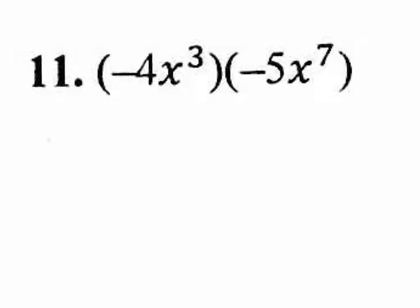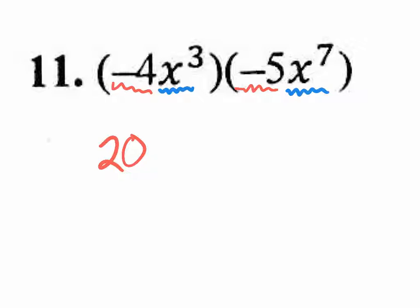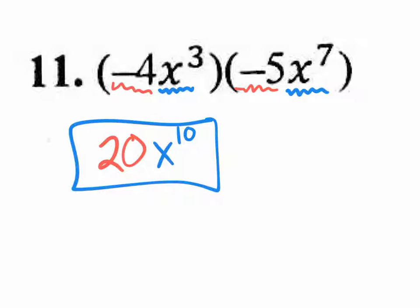Number 11: start with the coefficients. Negative 4 times negative 5 — that's positive 20. Then X to the third times X to the seventh: you add the exponents — 3 plus 7 gives you X to the tenth, not X to the 21st. The answer is 20X to the tenth.